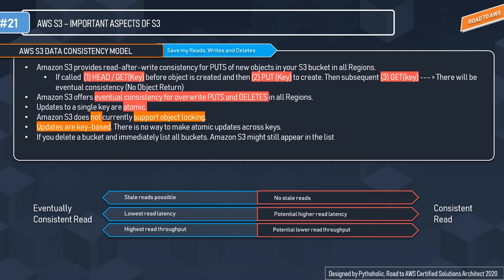There are two consistency types: eventual consistency reads and consistent reads. Eventual consistency means at some point in time the data will be consistent — you may not get the proper data now, but eventually you will. Consistent reads always give you the proper data when you request it. With eventually consistent reads, you have a higher possibility of stale reads but lower read latency and higher read throughput. With consistent reads, you always get the latest data, but there is potentially higher read latency and lower read throughput.